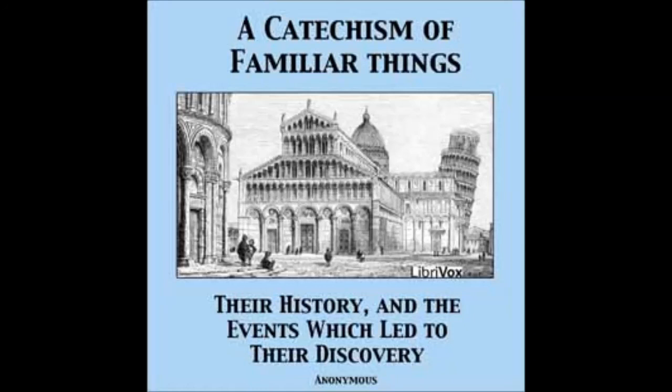Of what substances was money usually made? Of metals, especially the precious metals, because they possess great value in small bulk, may be kept for any length of time without loss, and their value, although not altogether invariable, yet generally speaking, changes only by slow degrees, and is less susceptible of fluctuation than that of most other articles. At different times and amongst various nations, however, other things, in the scarcity of metal, have been substituted for it, as shells, wood, leather, paper, or even pasteboard, on extraordinary occasions.